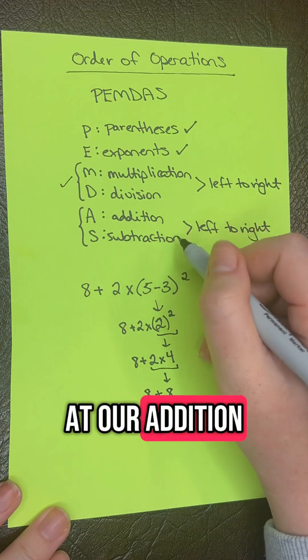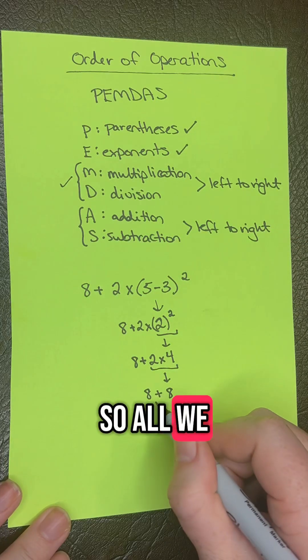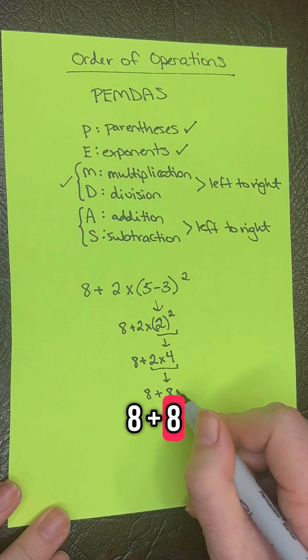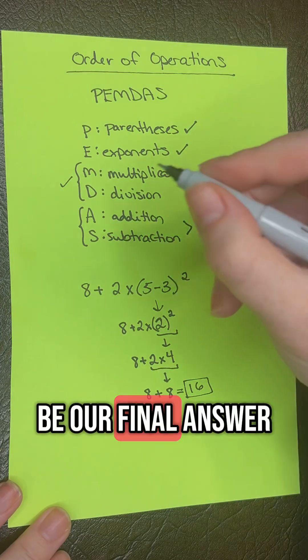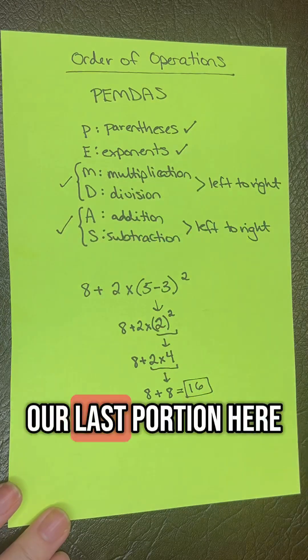Now let's look at addition and subtraction. All we have left is 8 plus 8, which equals 16. That's our final answer.